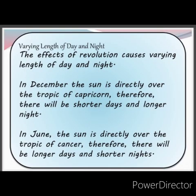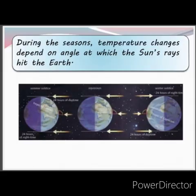The effects of revolution cause varying lengths of day and night. In December, the Sun is directly over the Tropic of Capricorn; therefore, there will be shorter days and longer nights. But in June, the Sun is directly over the Tropic of Cancer; therefore, there will be longer days and shorter nights. During the seasons, temperature changes depend on the angles at which the Sun's rays hit the Earth, as shown in the picture.